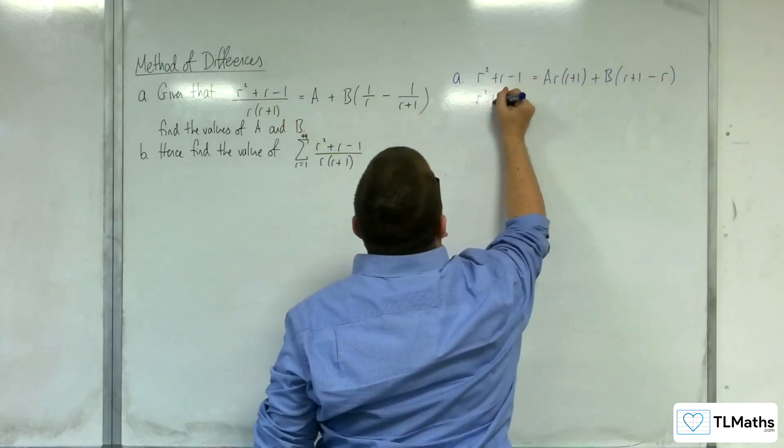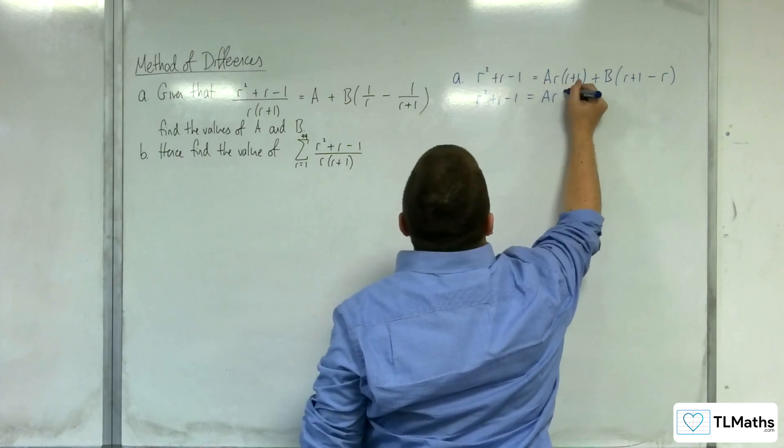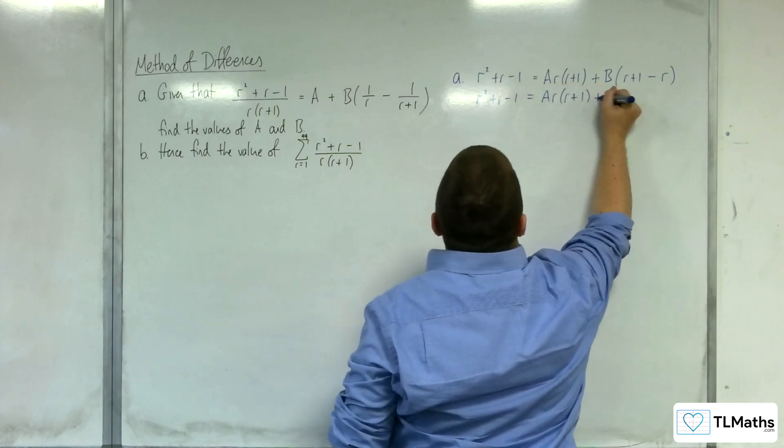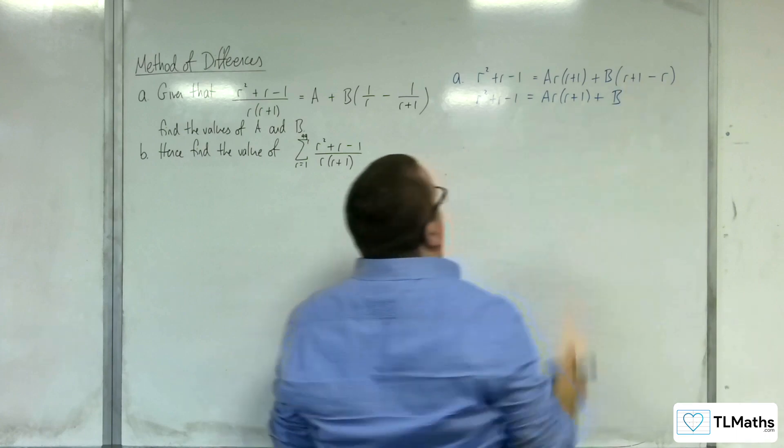So we've got r squared plus r minus 1 is equal to a times r(r plus 1), plus b times 1, so plus b.